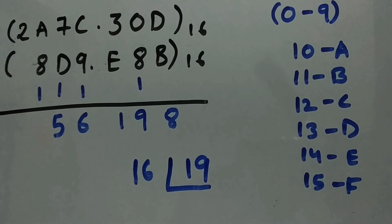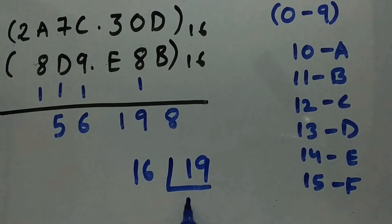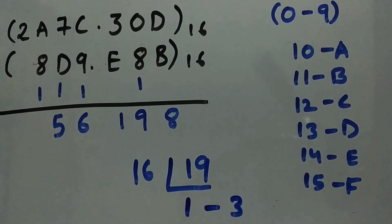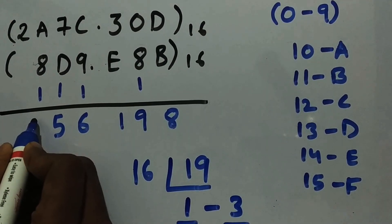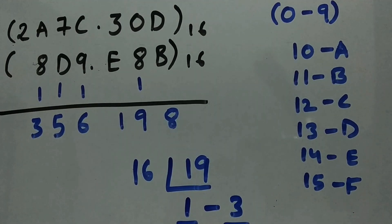19 into hexadecimal: 16 goes 1 time and remainder is 3. So this is the sum and this is the carry. So write the sum over here, that's 3, and carry is 1.